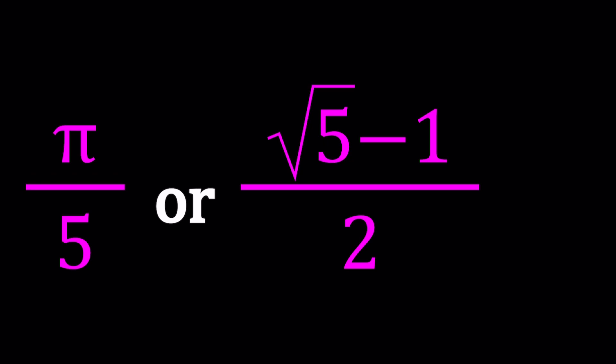We have π/5 which is an irrational number and also a transcendental number, which means it can't be the solution for a polynomial equation with integer coefficients. And we have another irrational number that's algebraic, which means it's not transcendental. That is √5 minus 1 over 2.